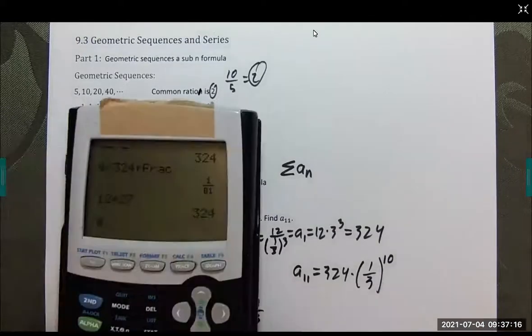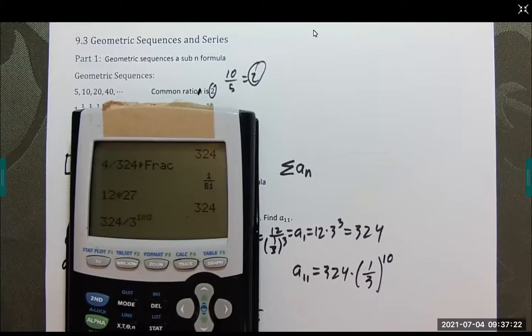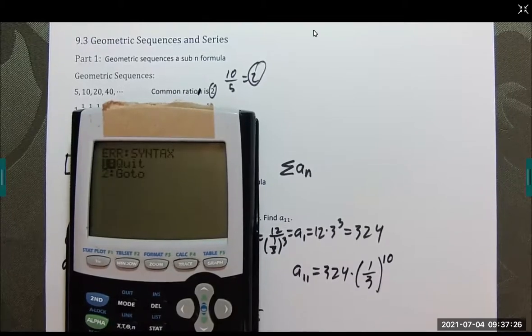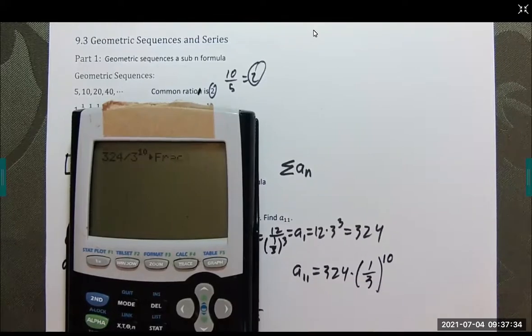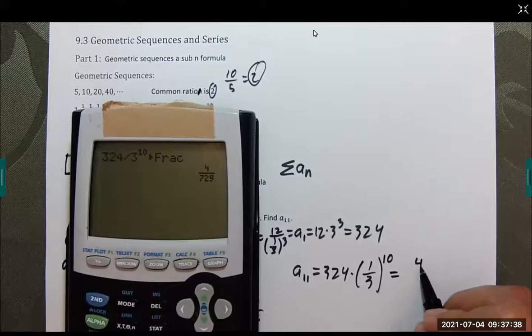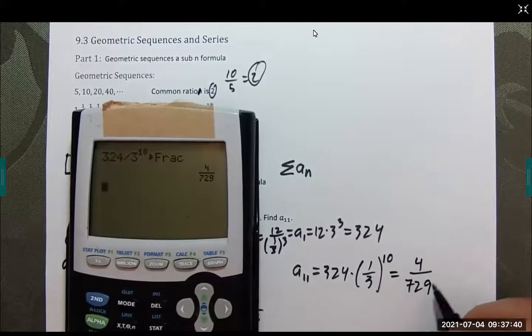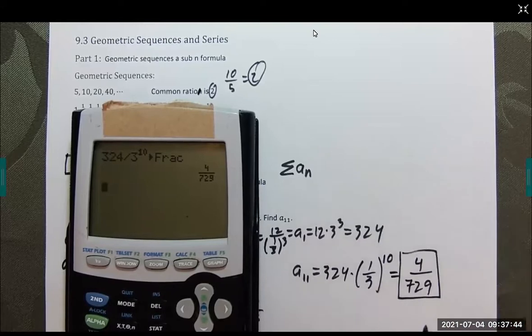Let's see what we get. 324 divided by 3 raised to the 10th power. Convert that to a fraction. We get 4 over 729.